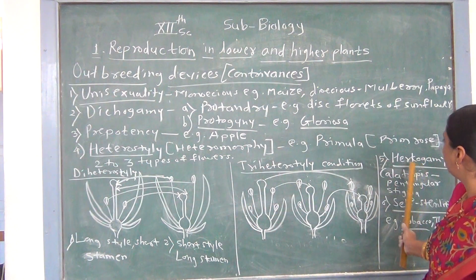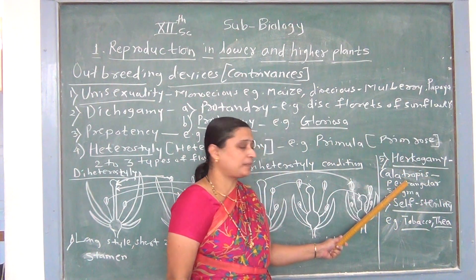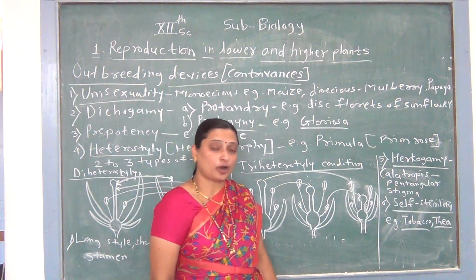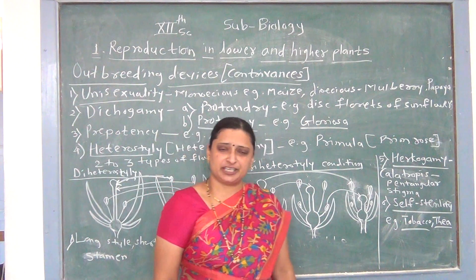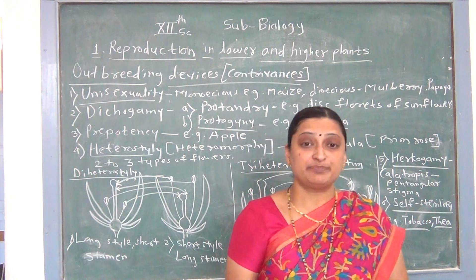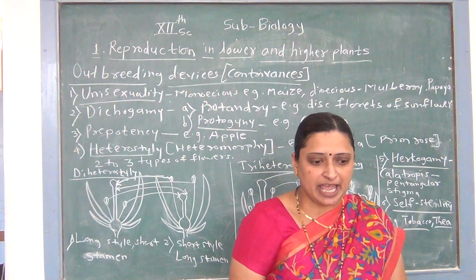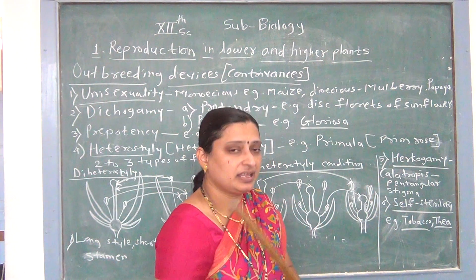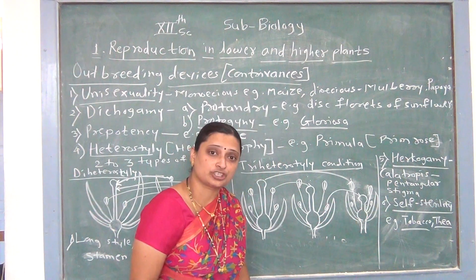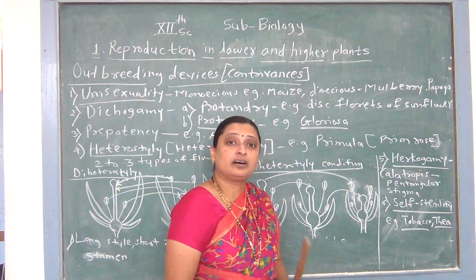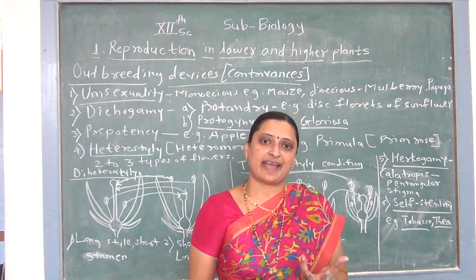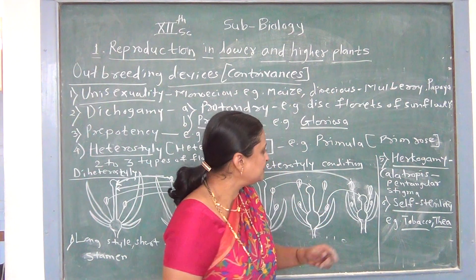The fifth device of outbreeding devices is called herkogamy. An example of herkogamy is Calotropis, which shows a pentangular stigma. Herkogamy means it is a special type of device which increases cross-pollination and prevents self-pollination in bisexual flowers. In such plants, there is a physical barrier between the stigma and stamen — between androecium and gynoecium — so self-pollination does not occur. The pollen grains are aggregated into a cyclic structure called pollinarium, present in the Calotropis flower.